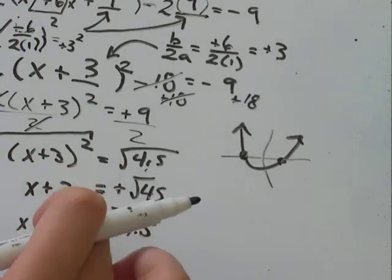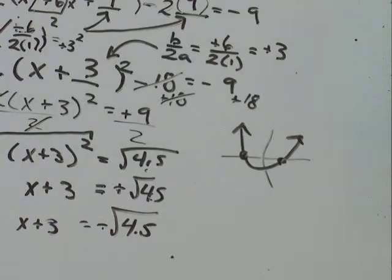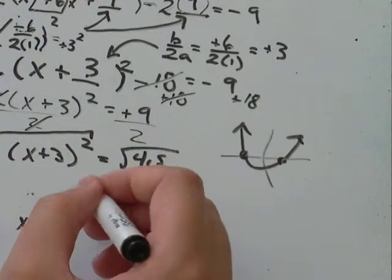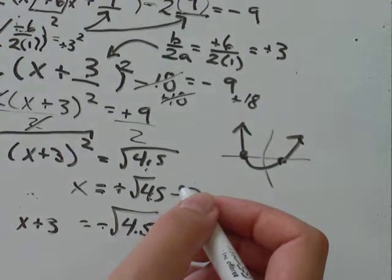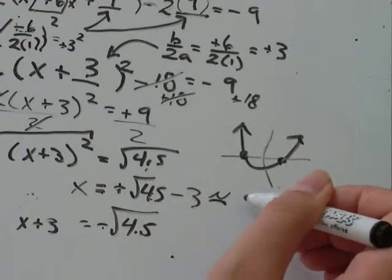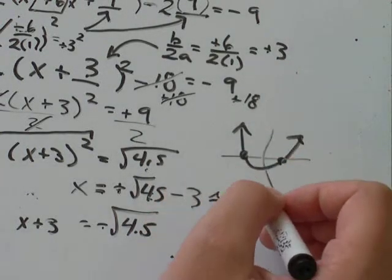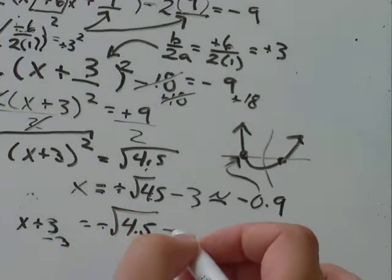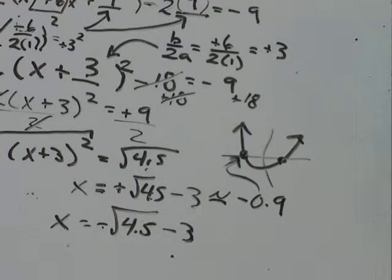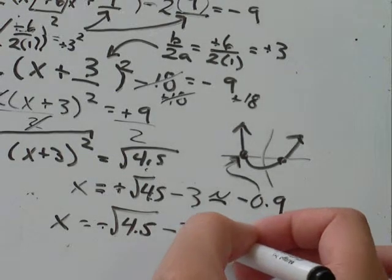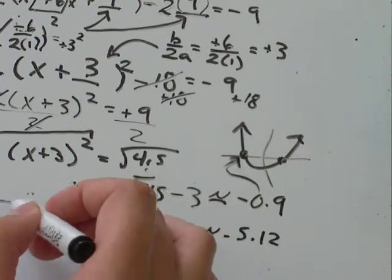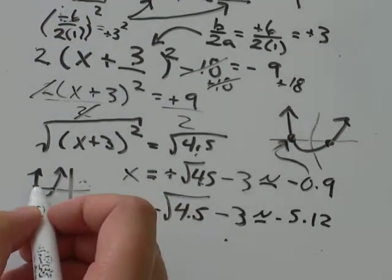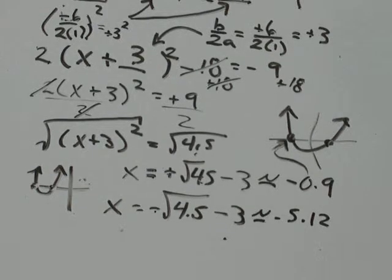Now, we don't really need the brackets anymore because it's all adding on this side. So if I solve for x from the first one, all I need to do is subtract 3 from both sides and I'll get x equals the square root of 4.5 minus 3. And I get that's approximately equal to negative 0.9. So that tells me that maybe that was this intercept up here. When I solve this one, I'll subtract 3 from both sides and I'll get x equals negative square root of 4.5 minus 3 and I get that's about equal to negative 5.12.